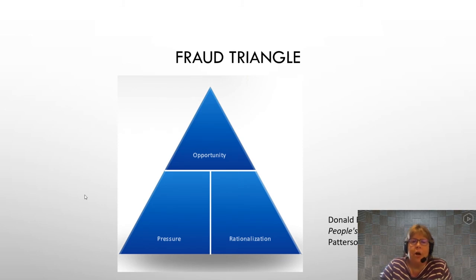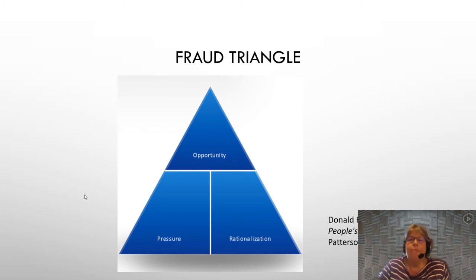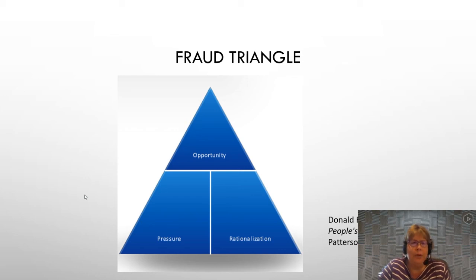This diagram shows the fraud triangle. There are really three components: opportunity, pressure, and rationalization. Early research showed that there are three things most fraudsters exhibited before committing a fraud. At the top is opportunity — they had some type of ability to commit the fraud.